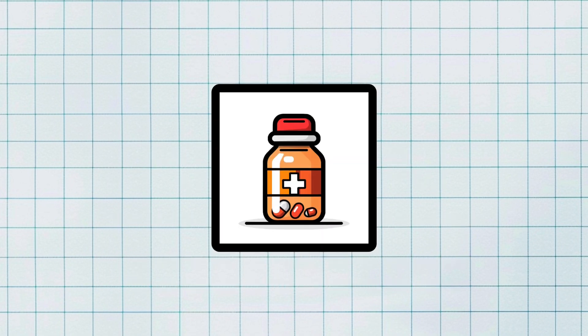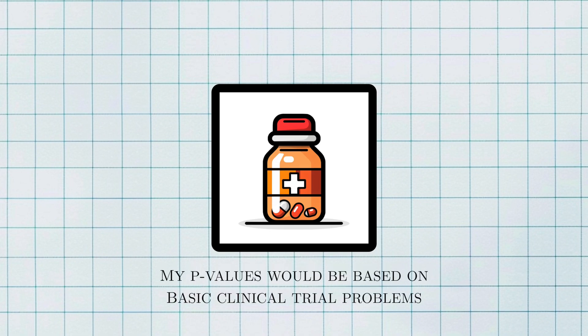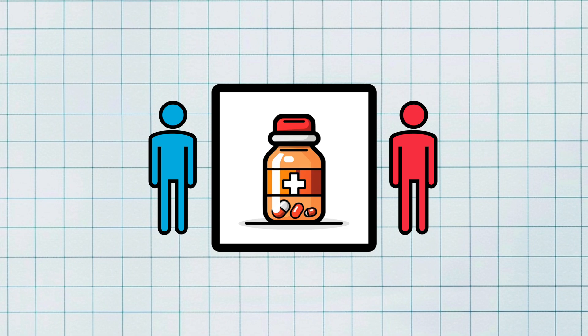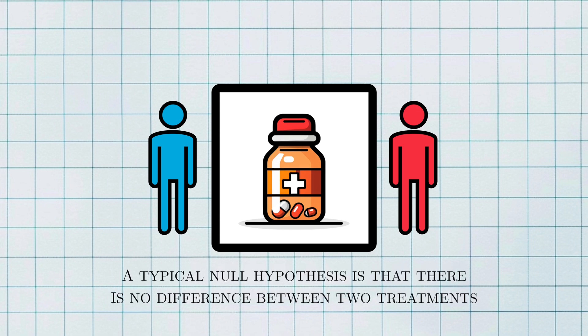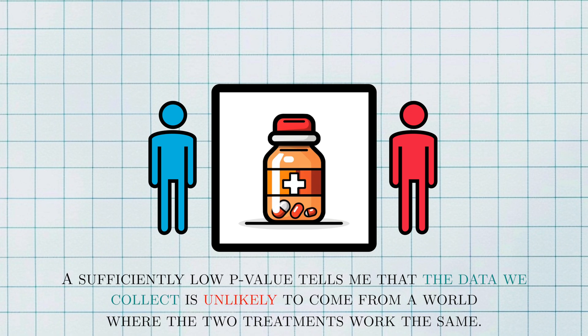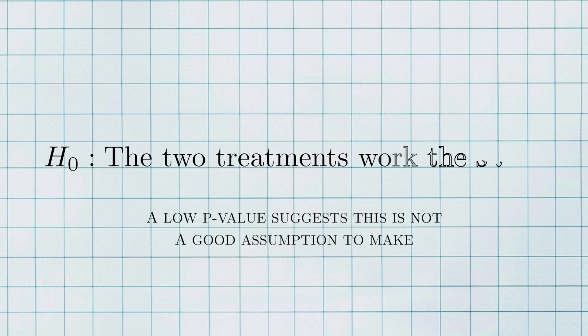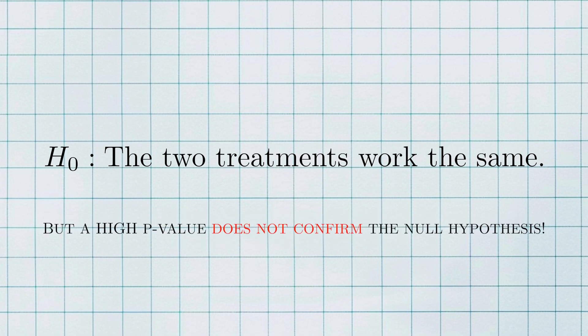For example, I work in biostatistics, so I should be able to translate the p-value in terms of basic clinical trials. For a trial comparing a new drug against a placebo, the null hypothesis is usually that there's no difference between them. A sufficiently low p-value tells me that the data we collect is unlikely to come from a world where the two treatments work the same. It indicates that assuming the null hypothesis is true is probably not a good assumption to make. But on the other hand, a high p-value doesn't confirm that the null hypothesis is true. A p-value can only act as evidence against it.